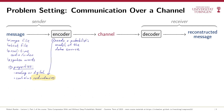So one job of the encoder is to remove redundancies from the message, but it turns out that the encoder also has to introduce new redundancies. To understand this, we have to think more about the channel and its properties.